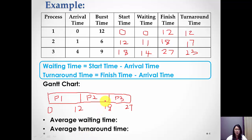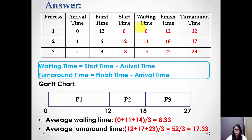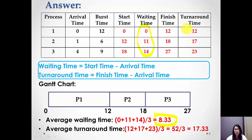Now we calculate the average waiting time and the average turnaround time. For average waiting time, we sum up all waiting time values — 0, 11, and 14 — and divide by the number of processes, which is 3. The average waiting time is 8.33. For average turnaround time, we sum 12, 17, and 23, and divide by 3. The average turnaround time is 17.33.